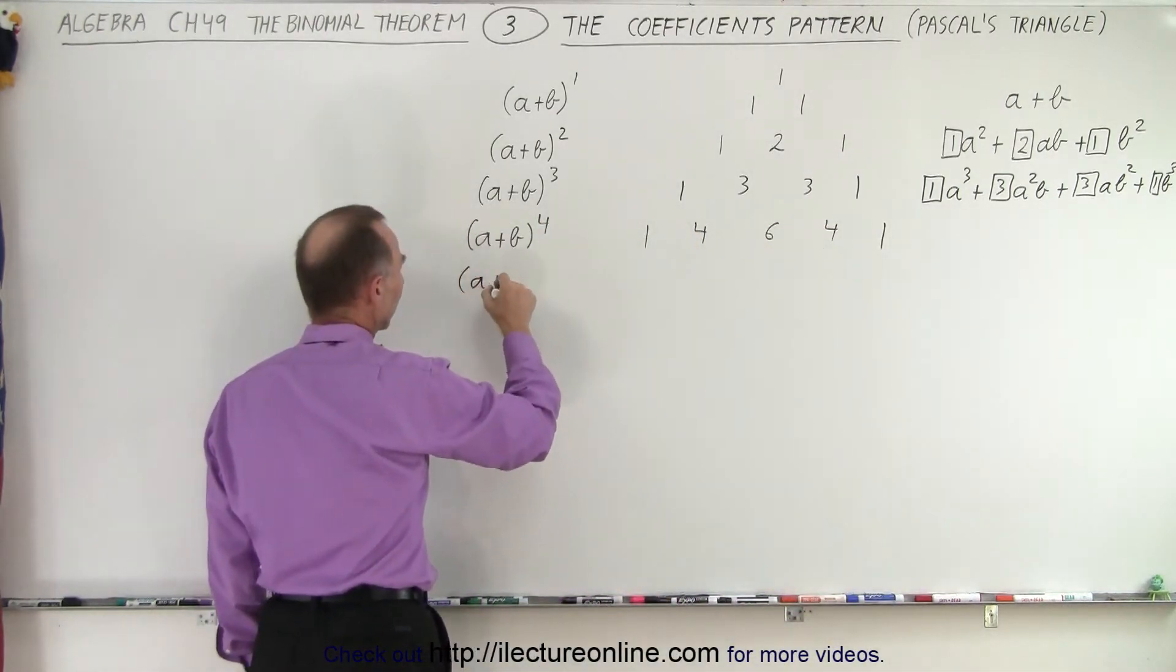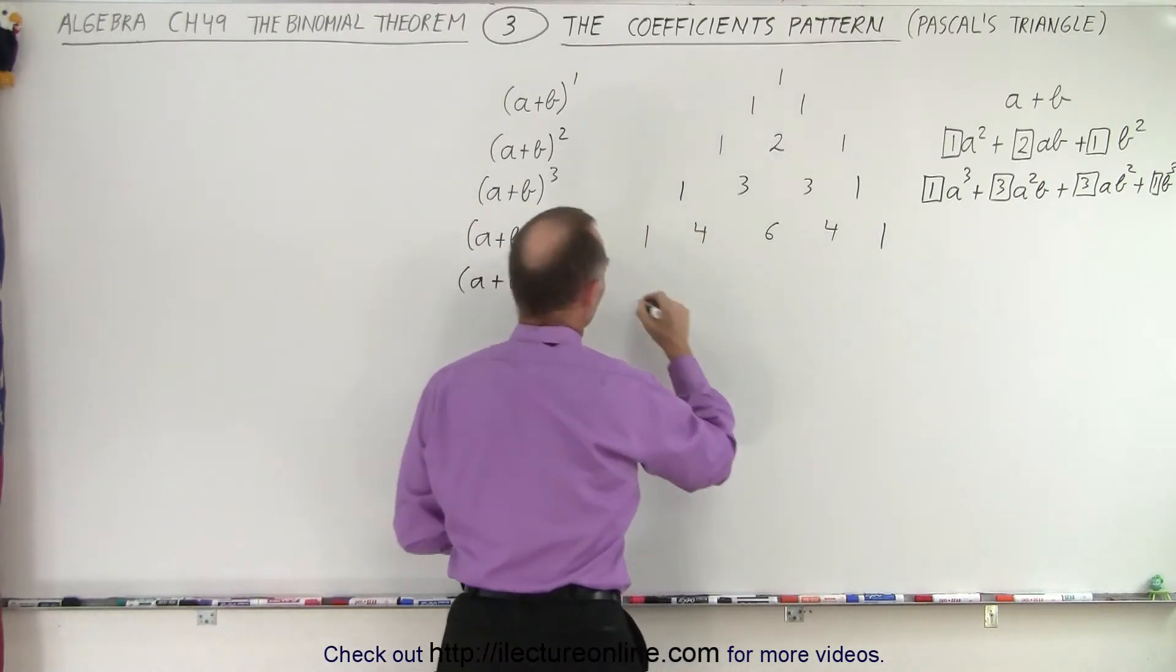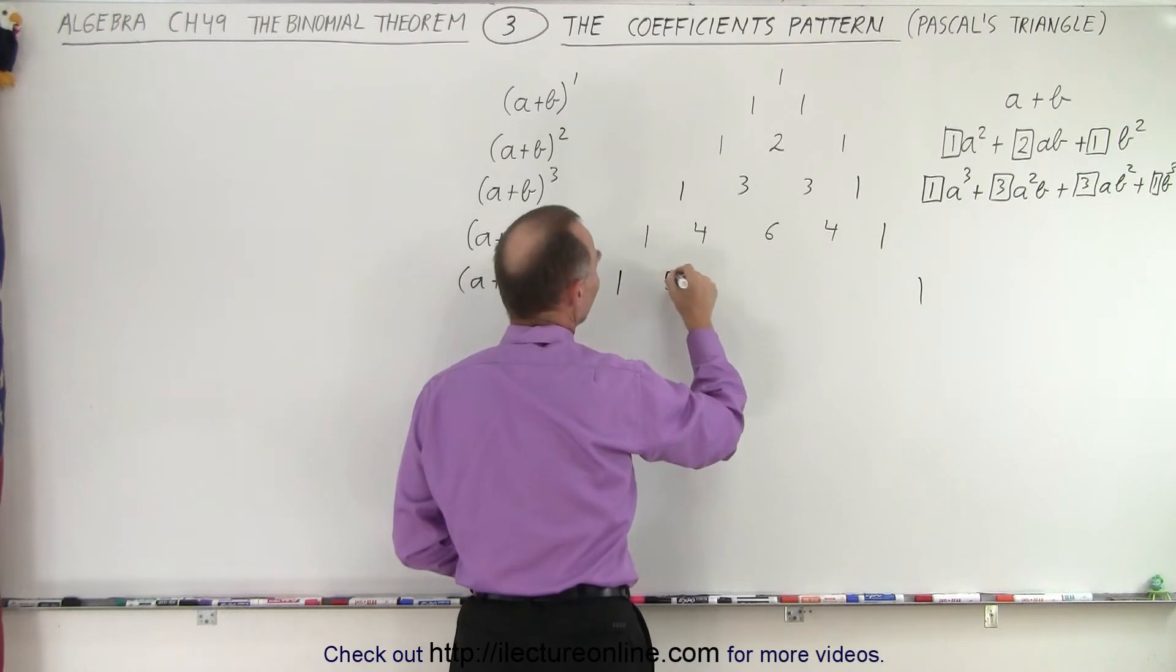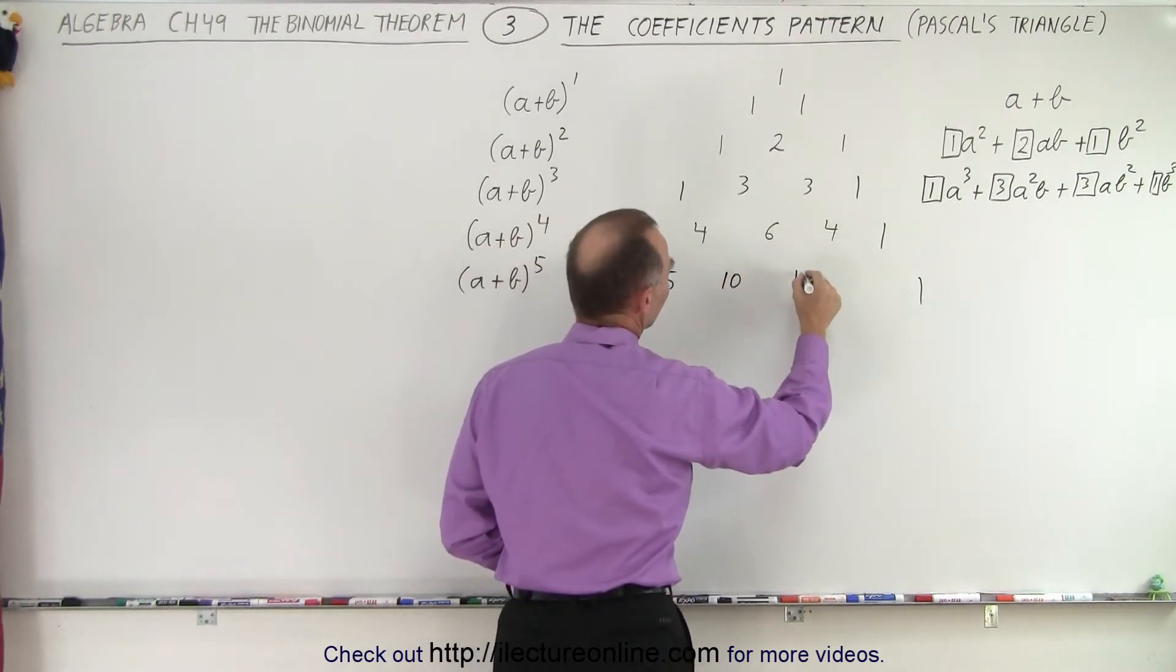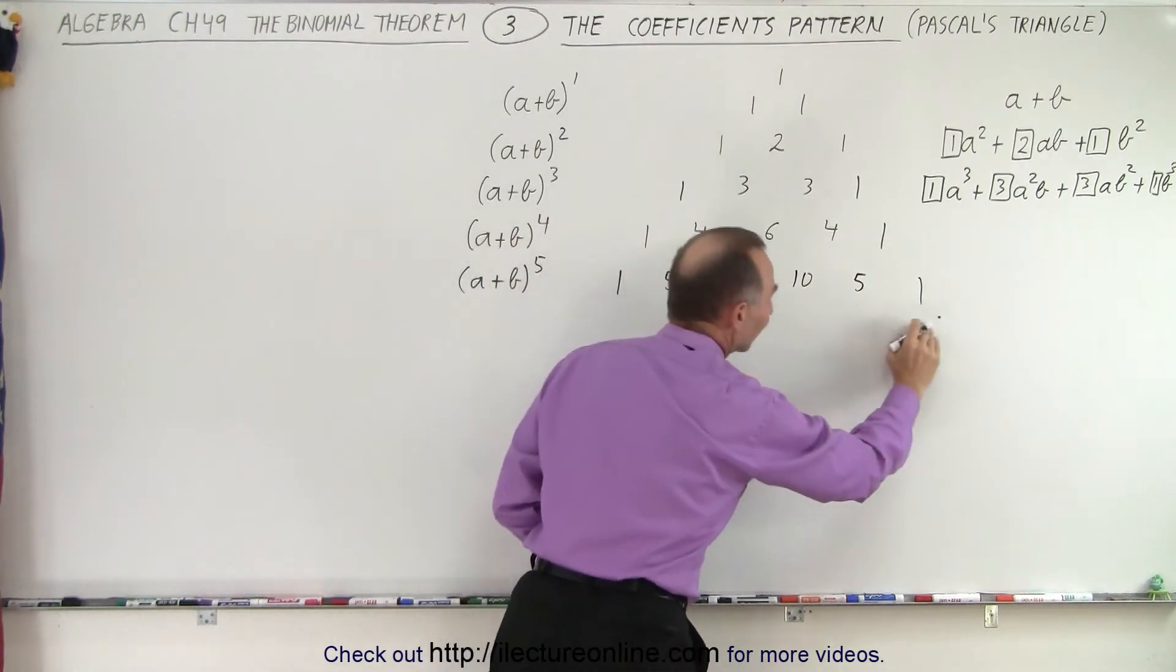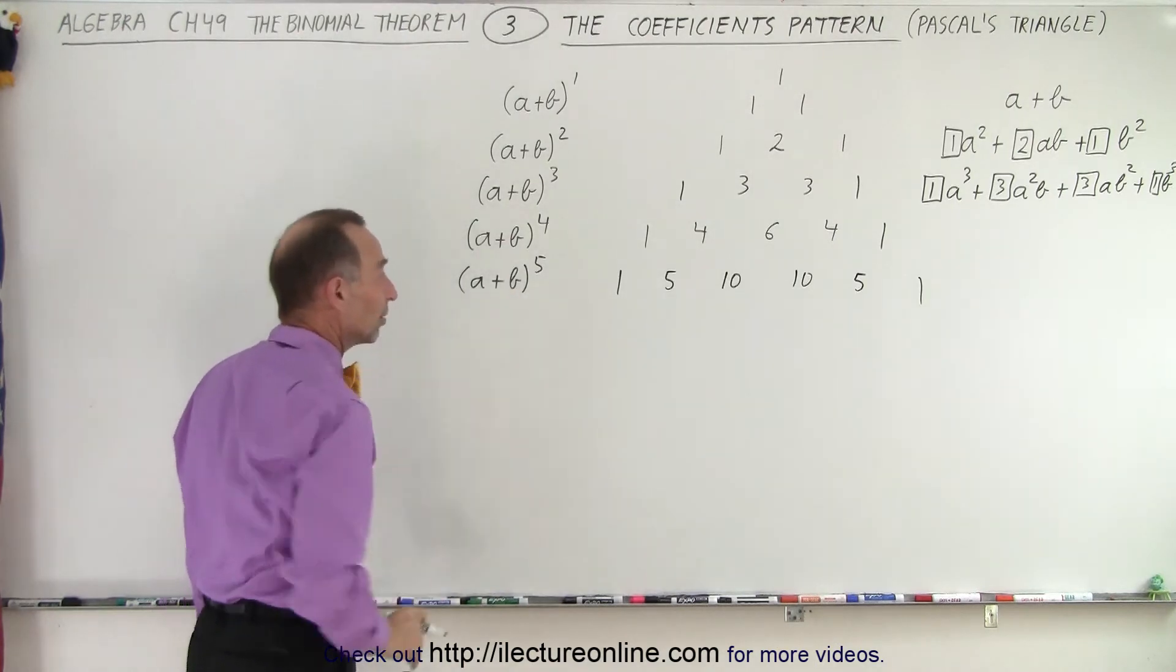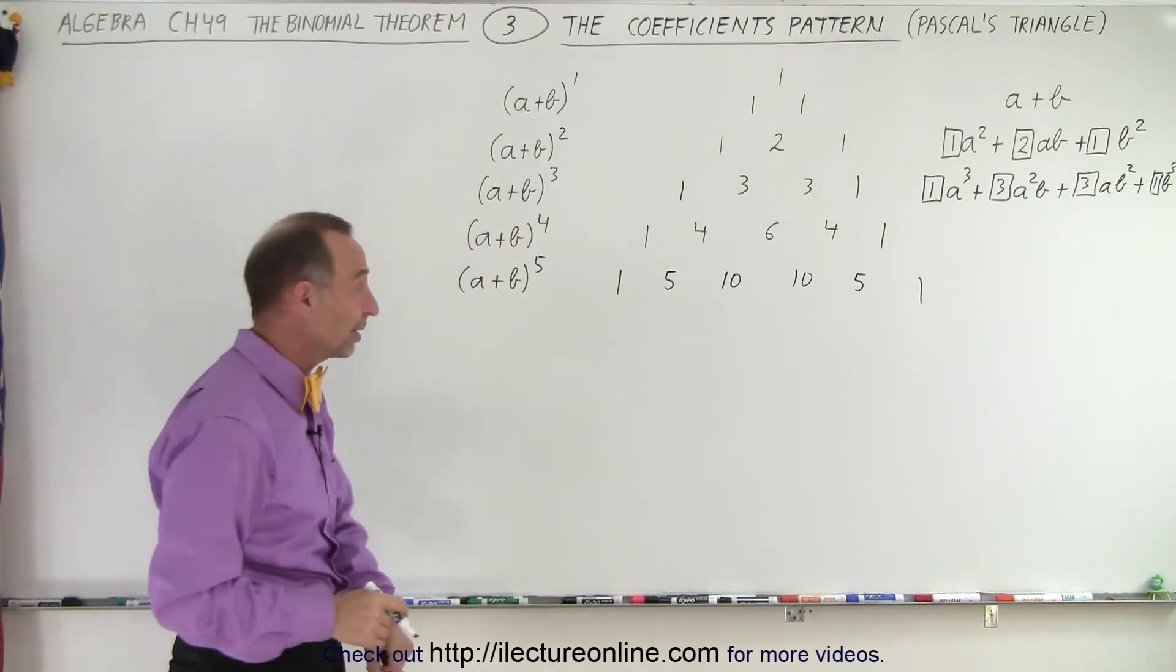Now we take a plus b to the fifth power. Again, we move the ones out. Like this. Then we take the 1 plus 4. That gives us 5. 4 plus 6. That gives us 10. 6 plus 4. That gives us 10. 4 plus 1. That gives us 5. And now we have the next six numerical coefficients for our next expansion for a plus b to the fifth power. Begin to see the pattern? It's actually kind of fun when you think about it.